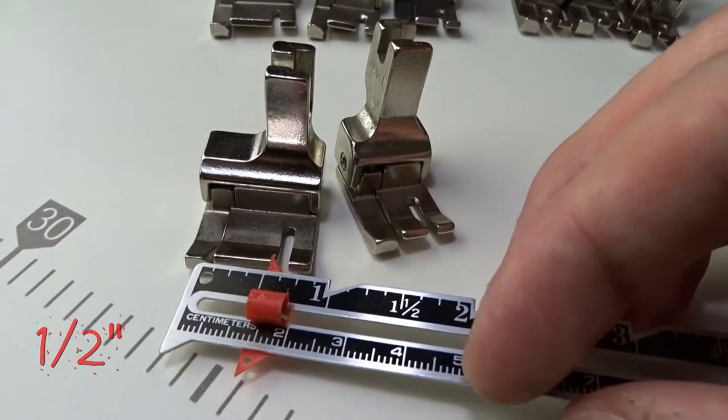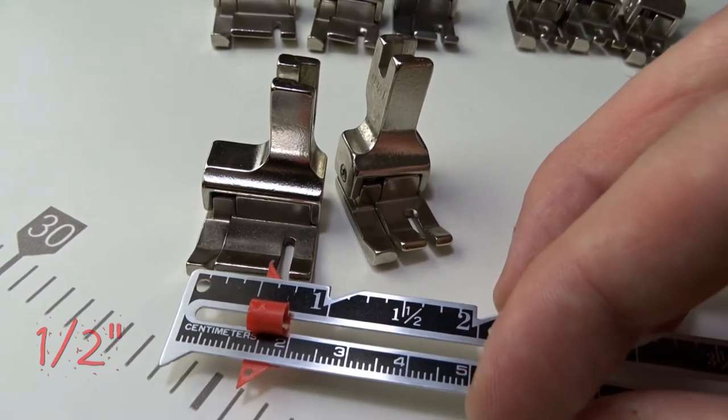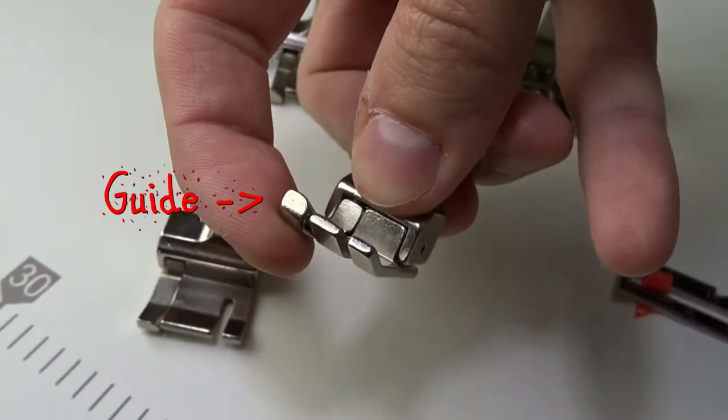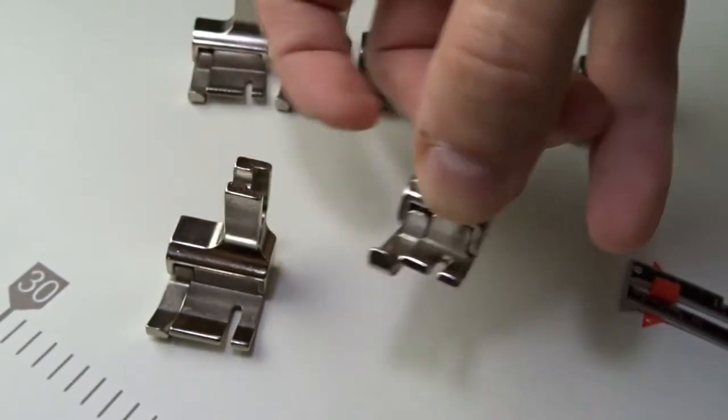For example this is half of an inch and this one is a quarter of an inch. The guide is there to help you sew straight.